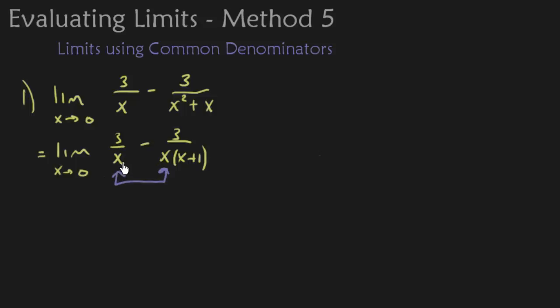So this one has the x plus 1, this one does not, so I'm going to multiply top and bottom by x plus 1. So we got the limit still as x approaches 0, 3 over x, and now I'm going to multiply top and bottom by x plus 1, and then we finish off.